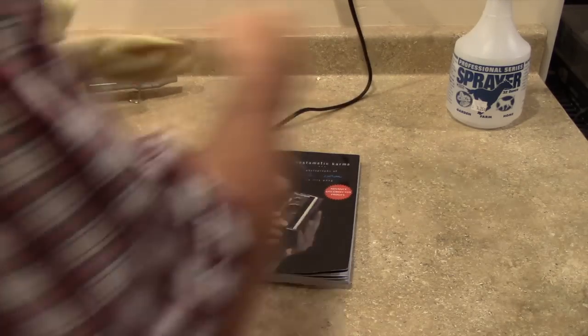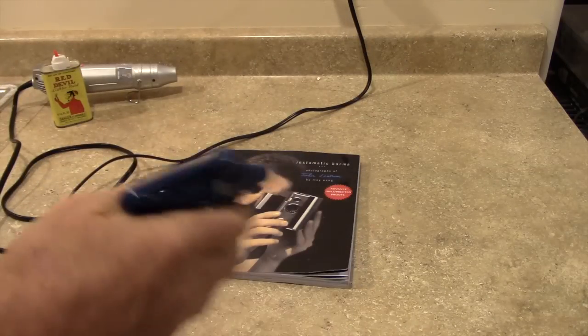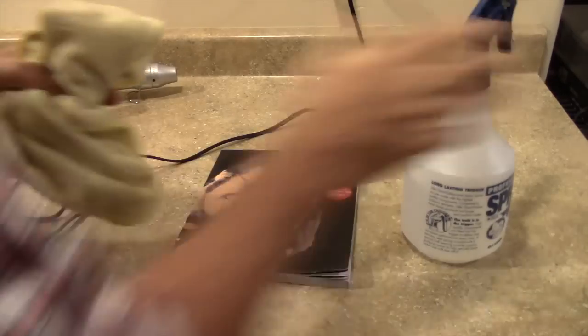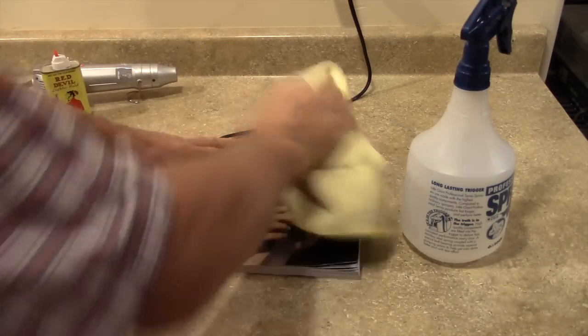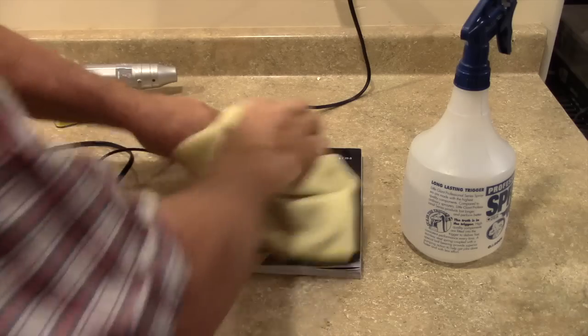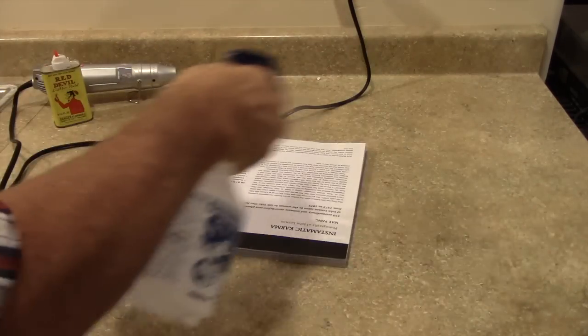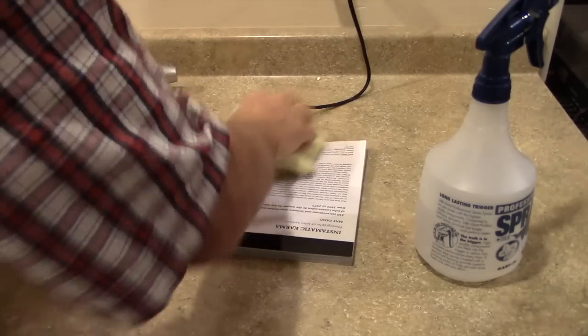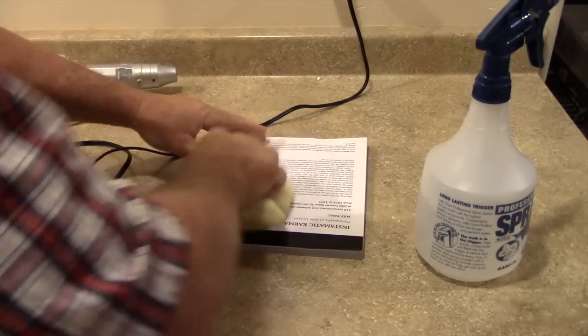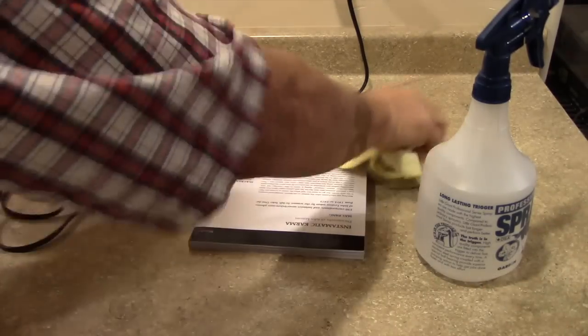And then to clean the whole book, I just take my alcohol, squirt it once or twice, take a big rag, wipe it down nice and clean. Flip it over. Another squirt or two. Get all that dirt and dust and stuff off.